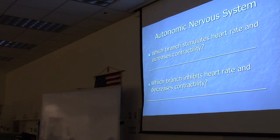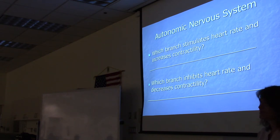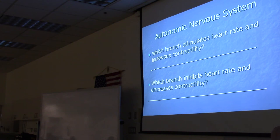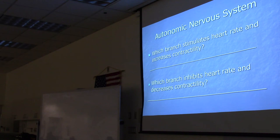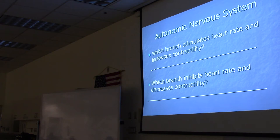The autonomic nervous system innervates the heart. The sympathetic branch stimulates heart rate and increases contractility. The parasympathetic branch inhibits heart rate and decreases contractility. When your heart is pounding before an exam, that's your sympathetic nervous system. After lunch when you're relaxed, the parasympathetic system takes over and slows your heart rate.